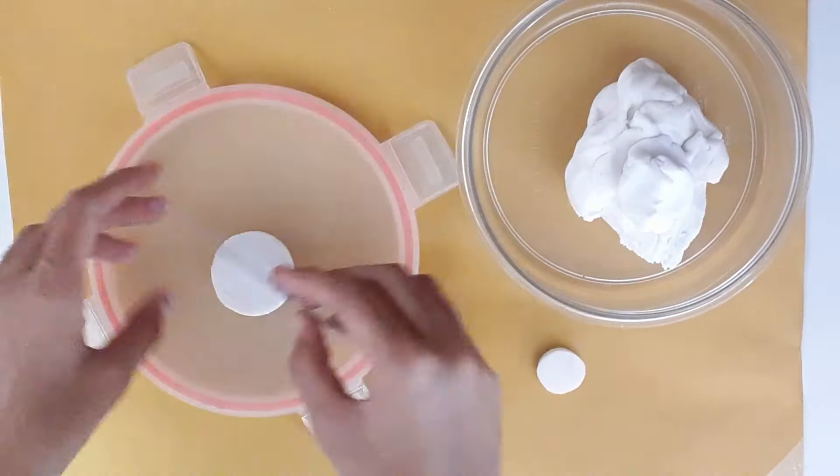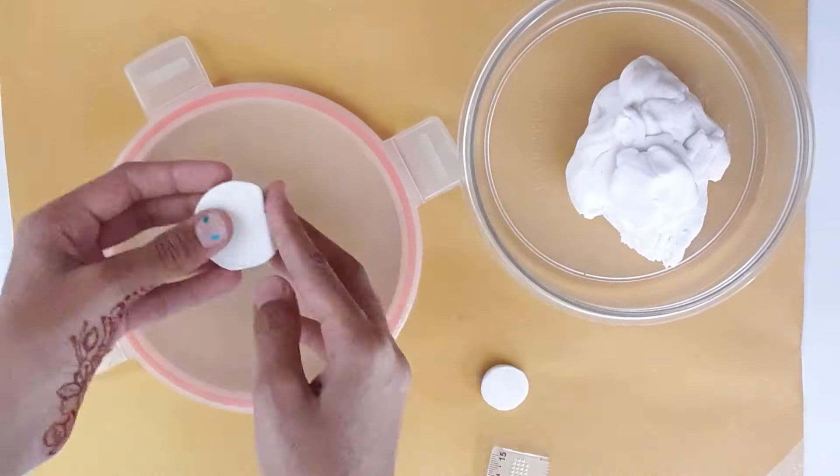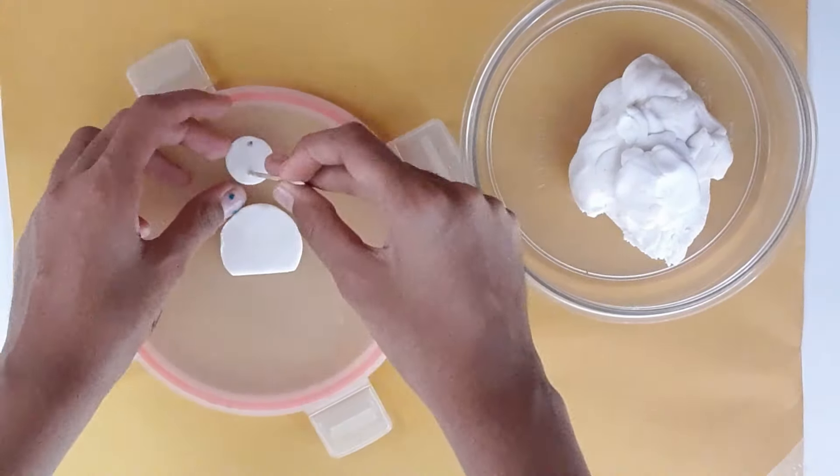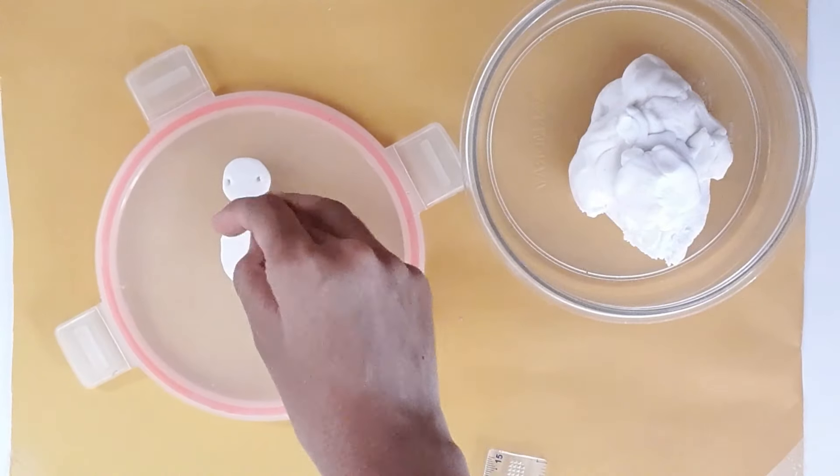Using a ruler, I am going to cut off a part from the bigger circle. And make holes on the circles with a toothpick.